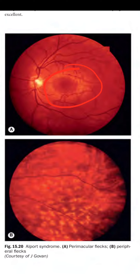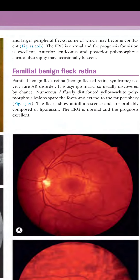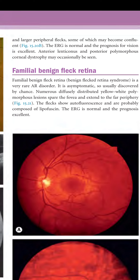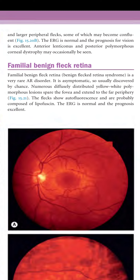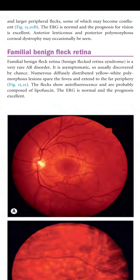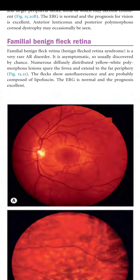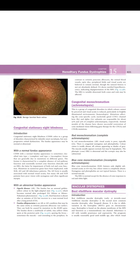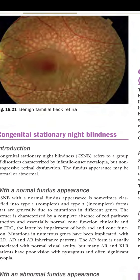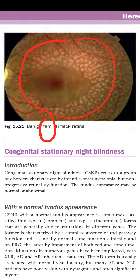Familial benign fleck retina (benign flecked retina syndrome) is a very rare autosomal recessive disorder. It is asymptomatic and usually discovered by chance. Numerous diffusely distributed yellow-white polymorphous lesions spare the fovea and extend to the far periphery. The flecks show autofluorescence and are probably composed of lipofuscin. The ERG is normal and the prognosis is excellent.